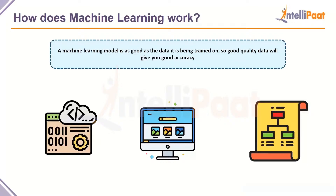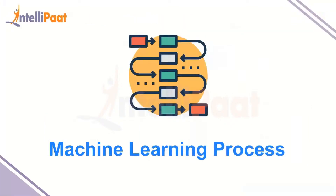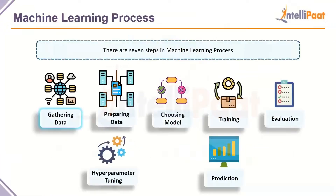All you can do is give it data, look at the predictions, and make sure it's performing well in the real world. A machine learning model is only as good as the data it is trained on — high quality data with large volume gives you a good chance of achieving good accuracy. If your dataset has missing values or outliers, it will cause a lot of issues for the machine to learn from. So make sure you have a good dataset.